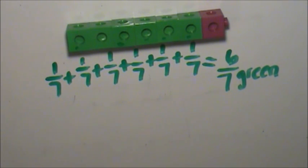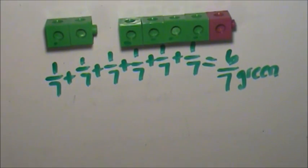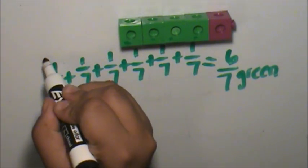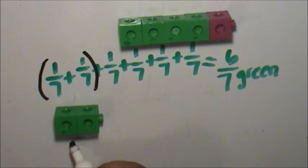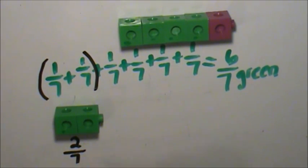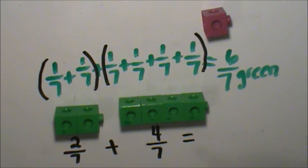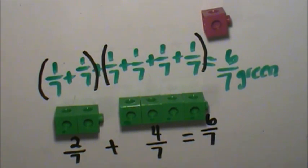Now, I will decompose 6/7 in many ways. Decompose means to break apart, so I will break apart my fraction. These are 2/7ths. These are 4/7ths. 2/7ths and 4/7ths is still 6/7ths.